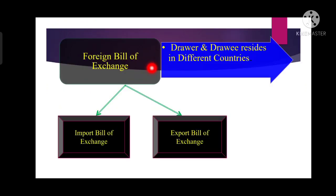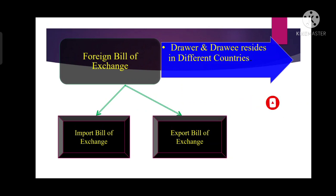Now we will talk about the foreign bill of exchange. A foreign bill of exchange is that type of bill of exchange where both parties are residing in different countries. For example, the bill is drawn in India and the buyer is in Russia, so the bill will be payable in Russia. Here both parties are residing in different countries. So a foreign bill is one where the drawer and the drawee reside in different countries.